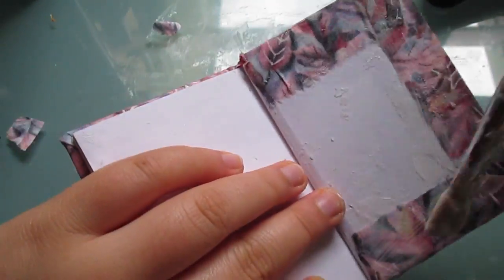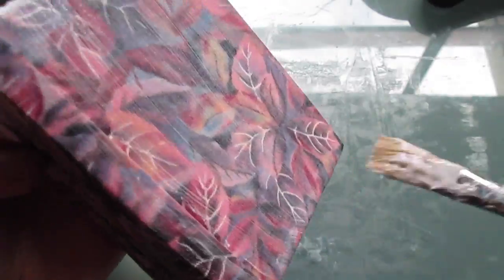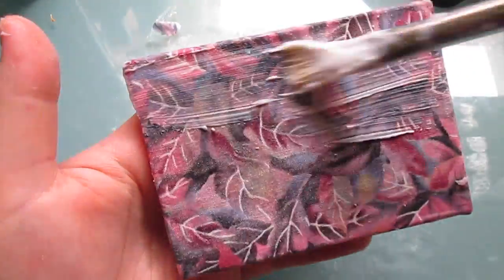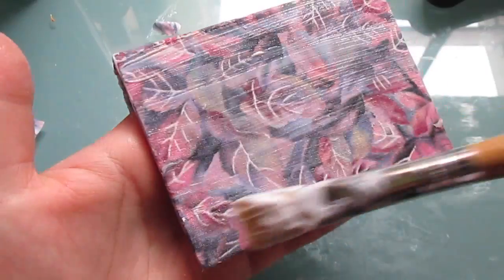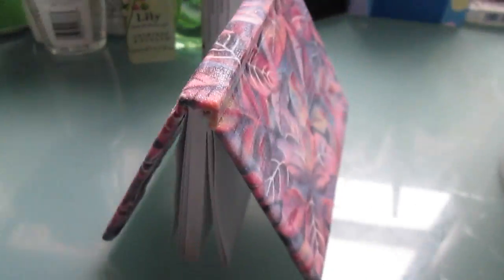Do this on the outside and the inside of the covers. Wherever there is fabric, apply Mod Podge. Once you've done this, just leave the notebook somewhere to dry for 24 hours or even more.